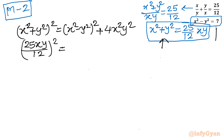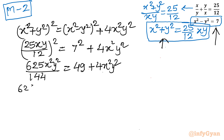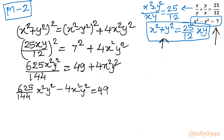On the right-hand side, x squared minus y squared is 7 from equation 2, so we write 7 squared plus 4x squared y squared. Expanding the left side: 625x squared y squared over 144 equals 49 plus 4x squared y squared. Moving 4x squared y squared to the left: (625 over 144 minus 4) x squared y squared equals 49. Simplifying the left side gives x squared y squared equal to 144, so xy equals plus or minus 12.